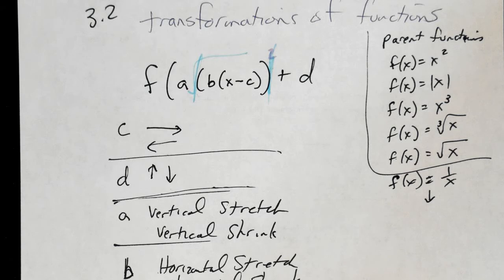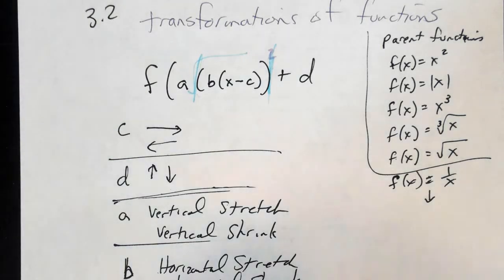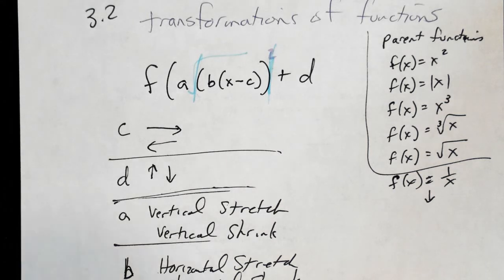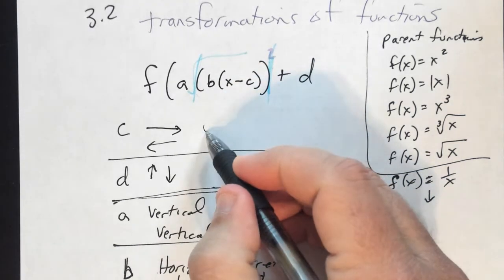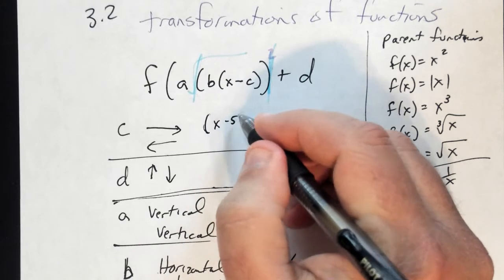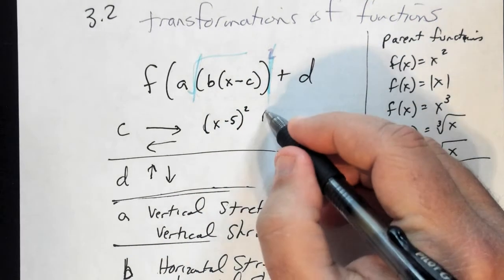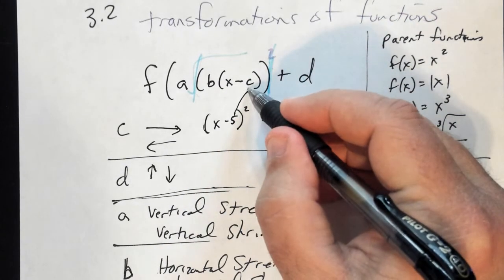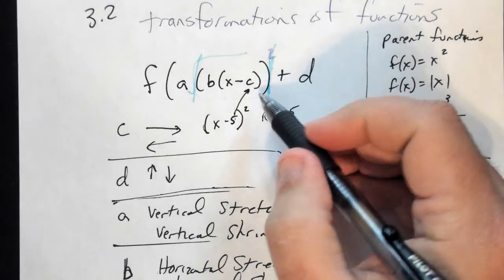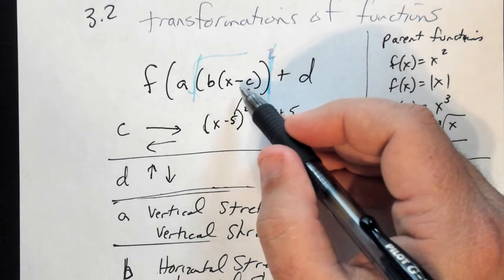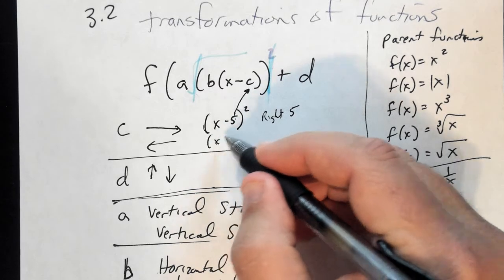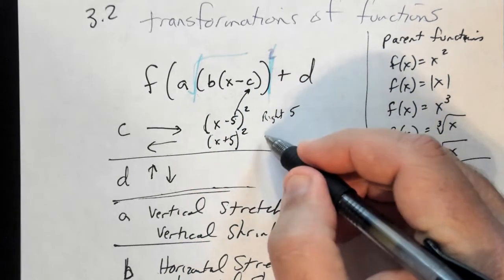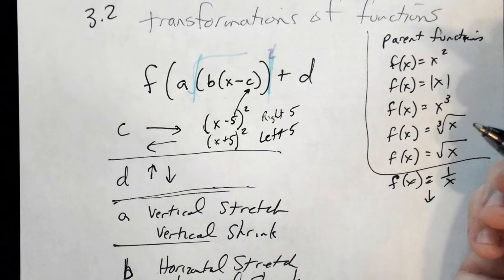Your C value controls how the function moves left or right. If you have something like (x − 5) squared, that's a shift to the right 5, because the value inside is positive — notice the minus sign is very important. If it's (x + 5) squared, it's going to be to the left 5.